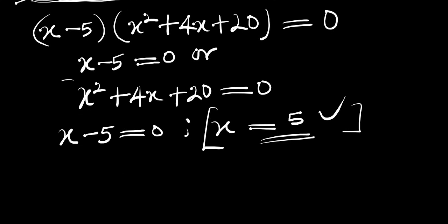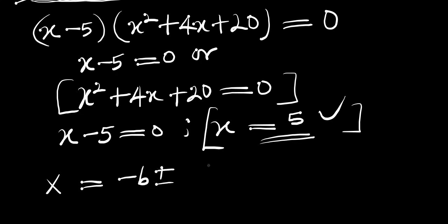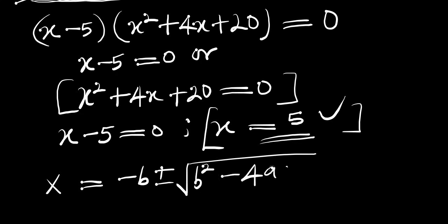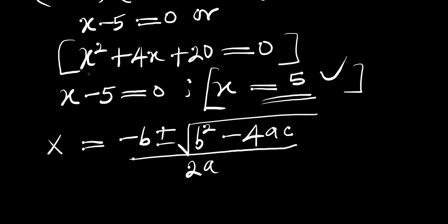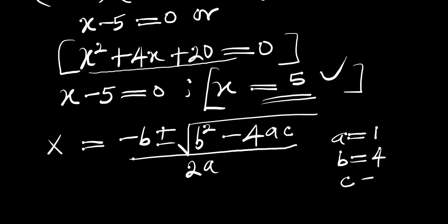In order to solve for the complex solutions, we need to solve the quadratic equation using the formula method: x equals negative b plus or minus square root of b² minus 4ac, divided by 2a. From this quadratic equation we have a equals 1, b equals 4, and c equals 20.